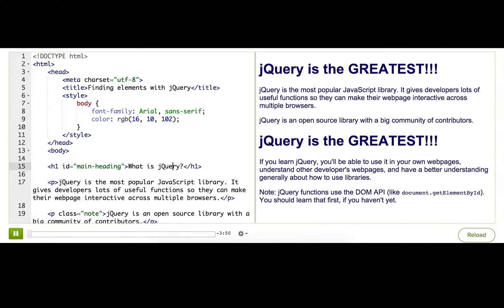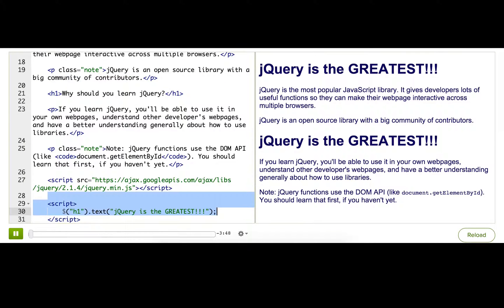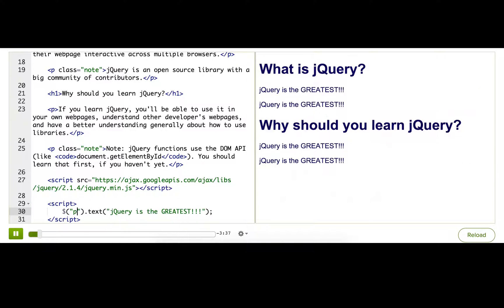In our previous talkthrough, we wrote this code here to change all of the h1s on the page. Now what if we wanted to change all of the paragraphs instead? We can do that by just changing h1 to p, and then presto, they all changed.